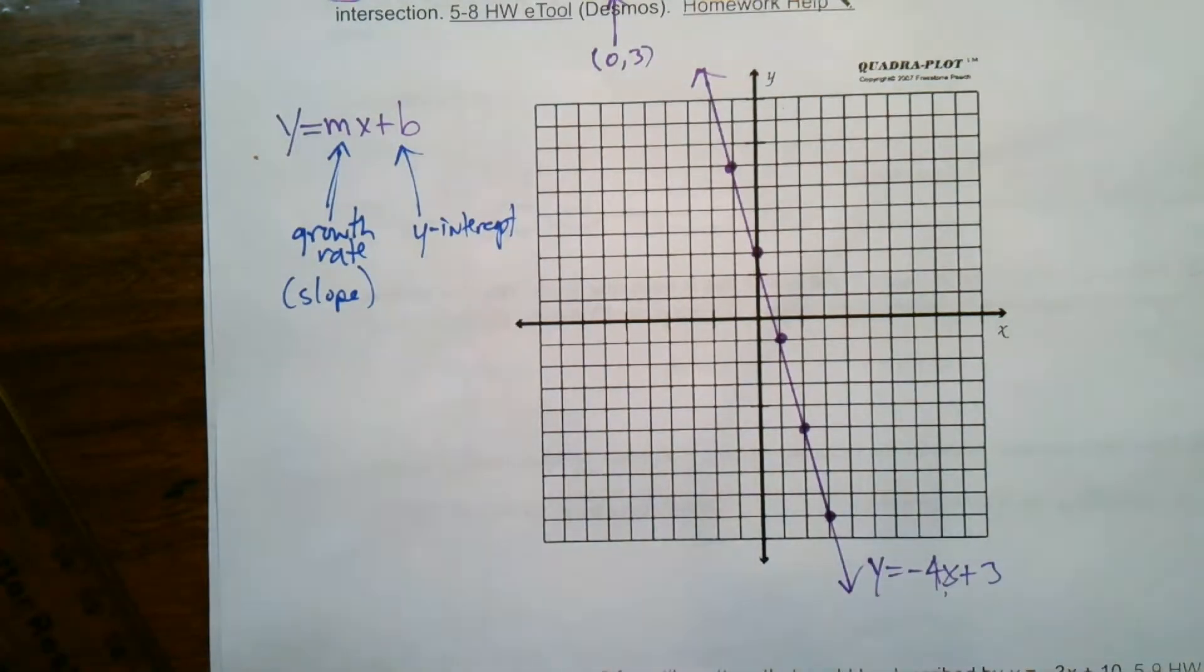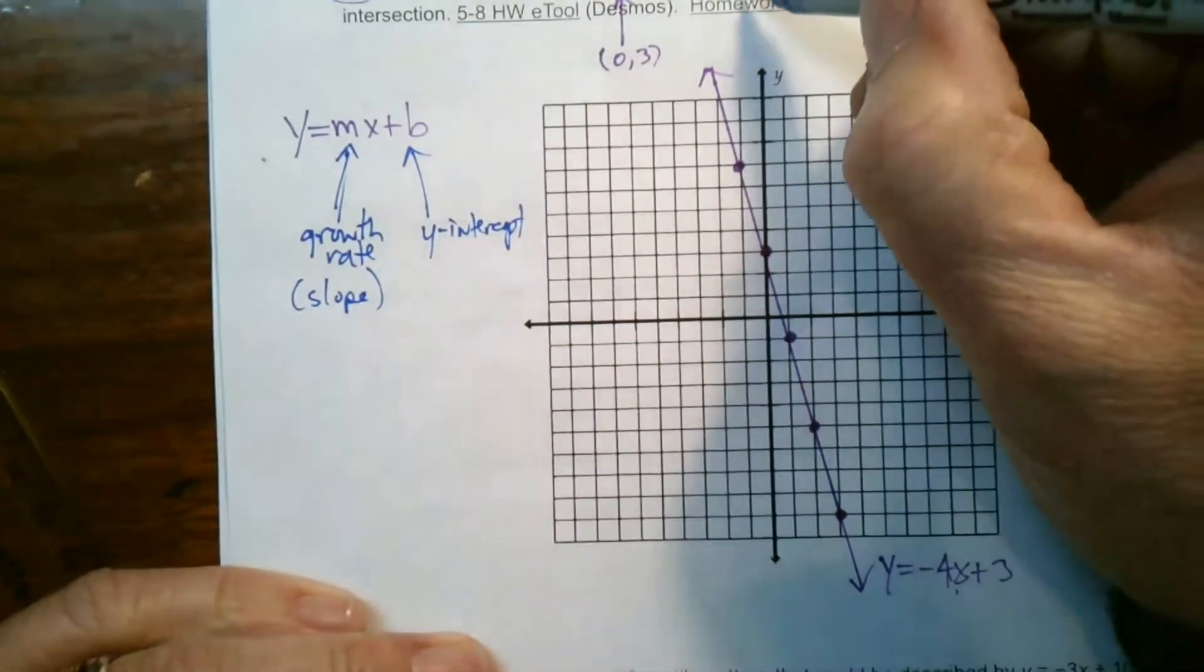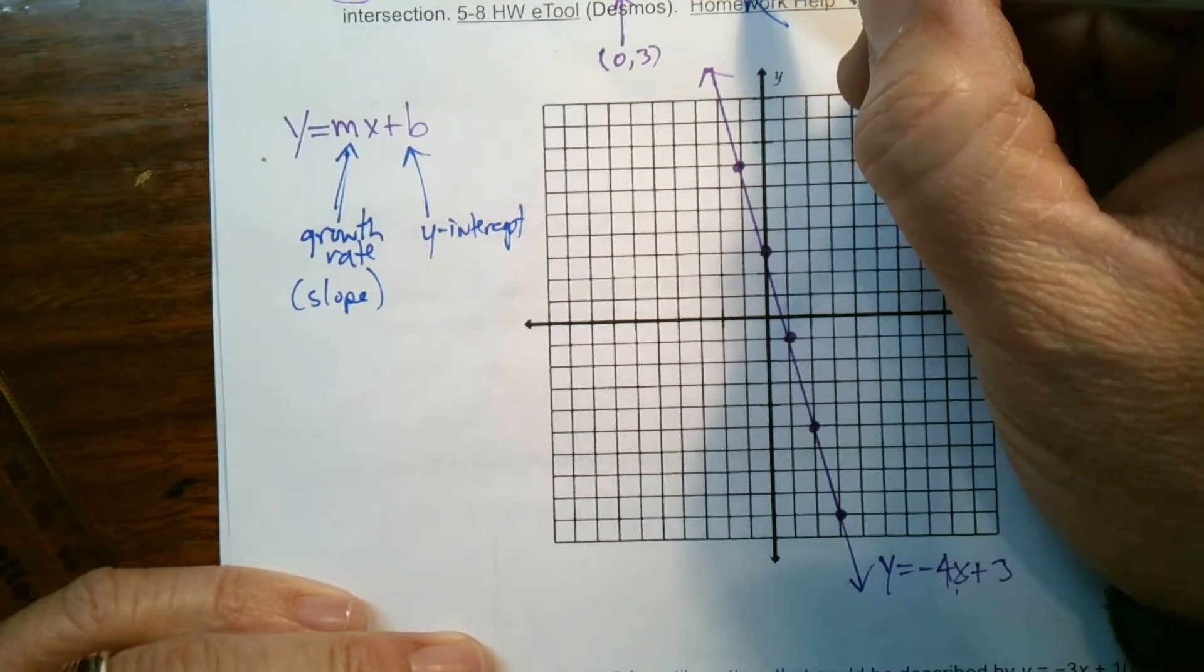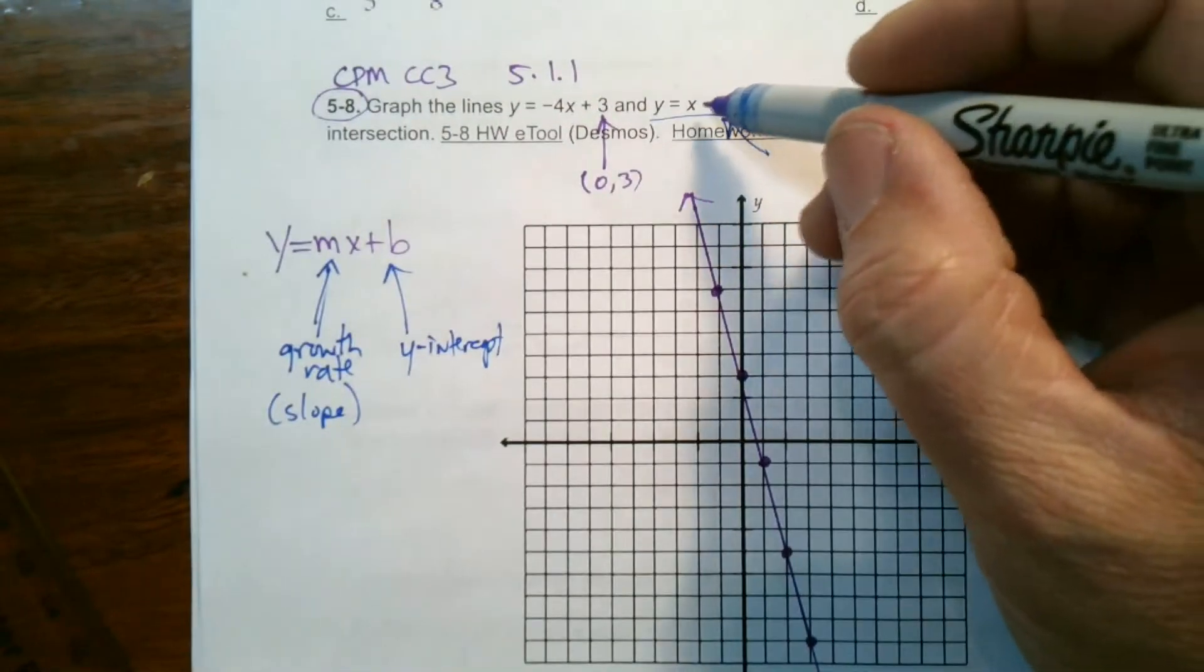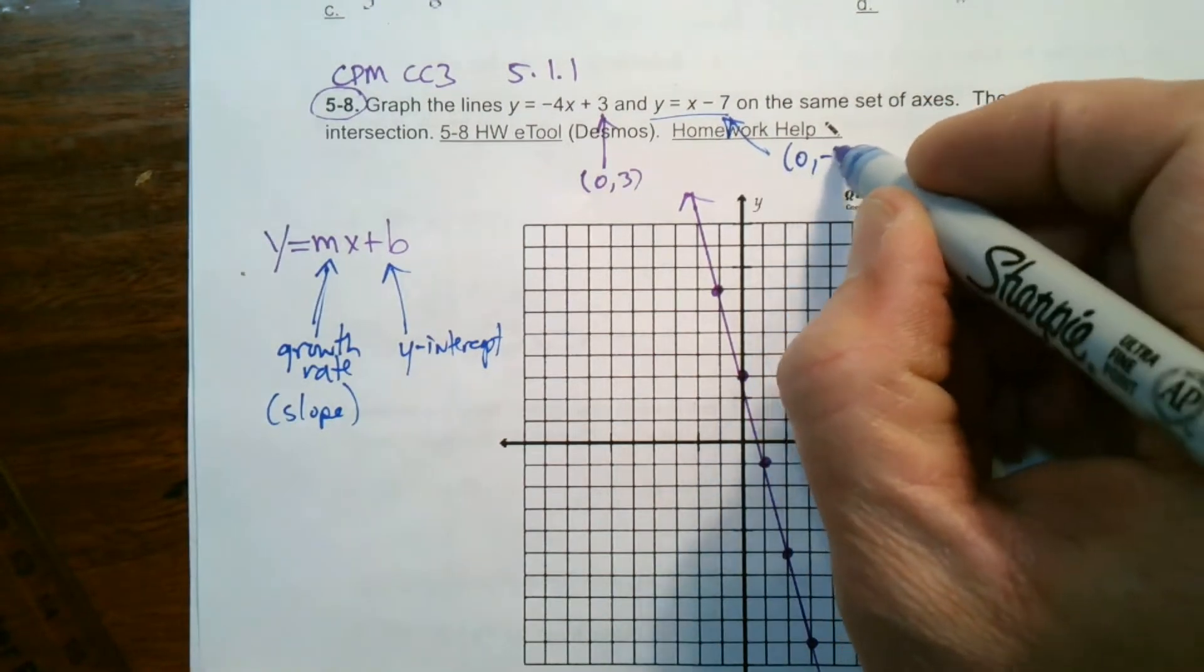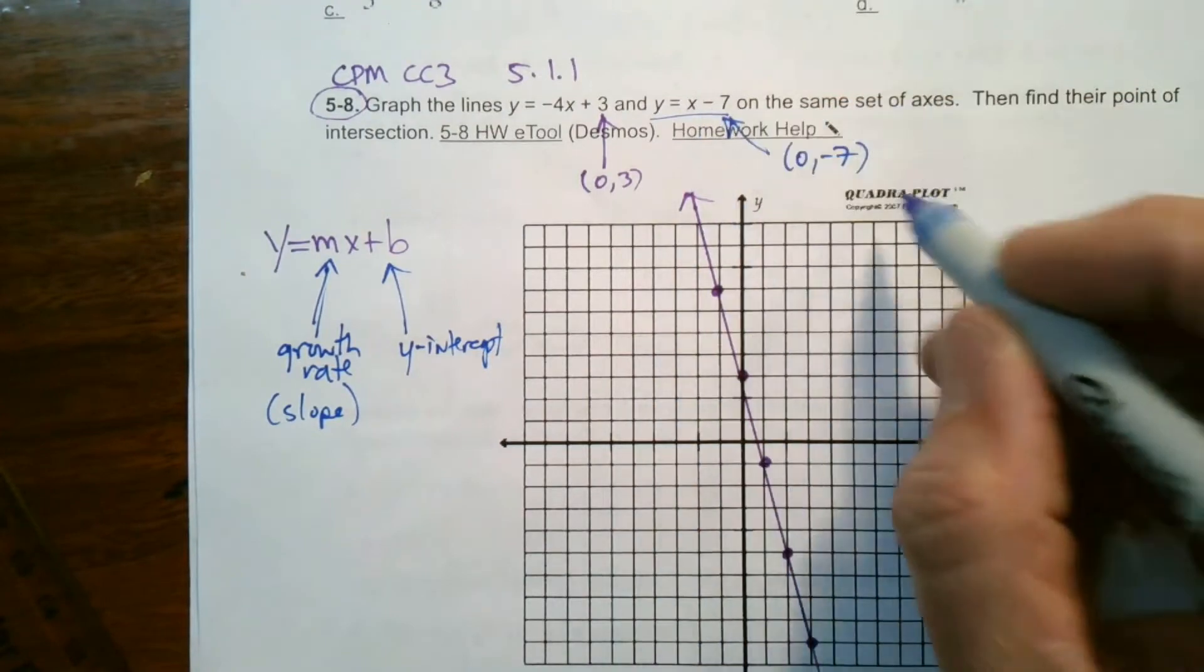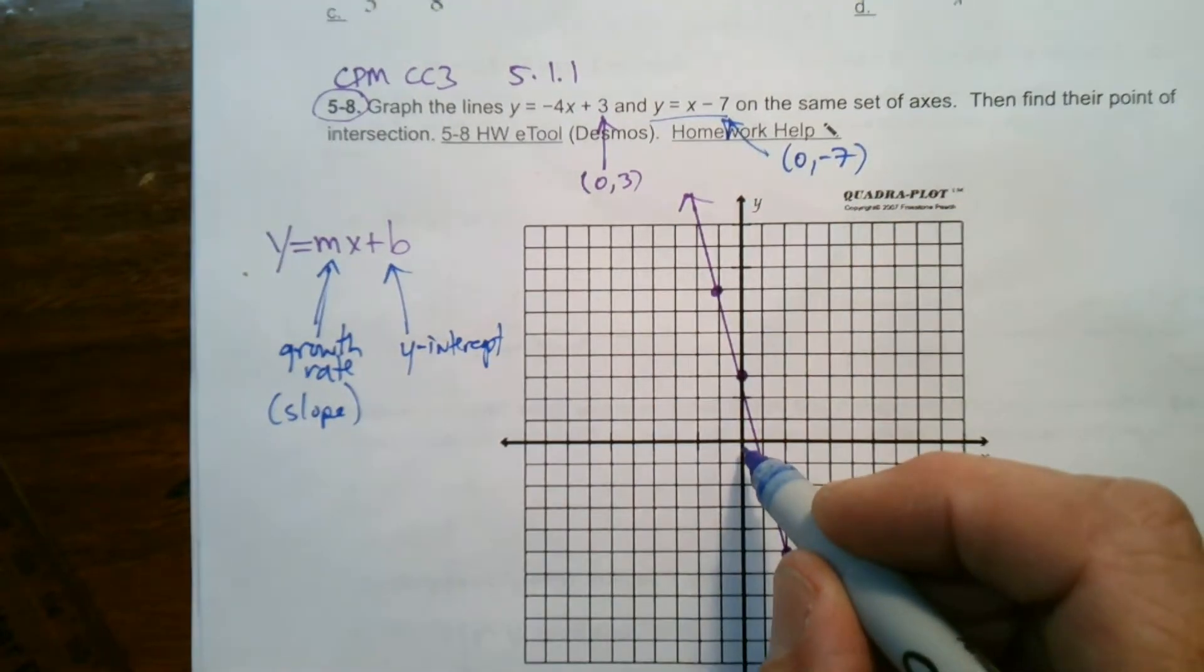So, that's that line. Let's graph the other one, and I'll graph it in another color so we can see the two lines. So, this equation. Once again, I'm going to start with the y-intercept. We've got to pay attention to this equation because that's minus 7. That means the y-intercept is at 0, negative 7. So, the y-intercept, the initial point, because the minus in front, means it's a negative 7.